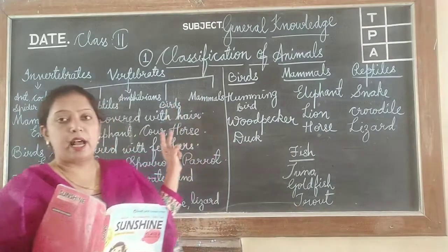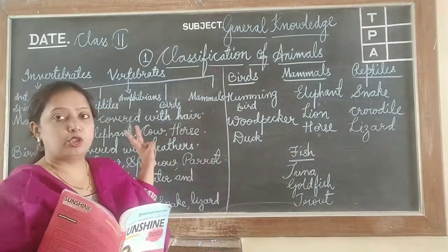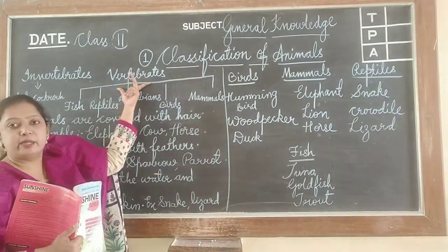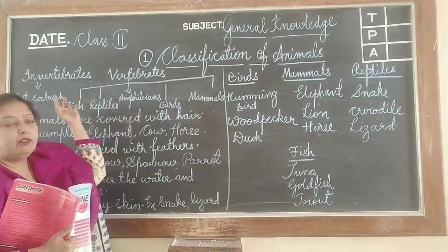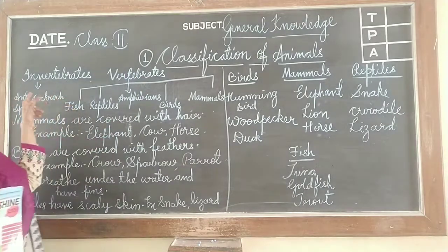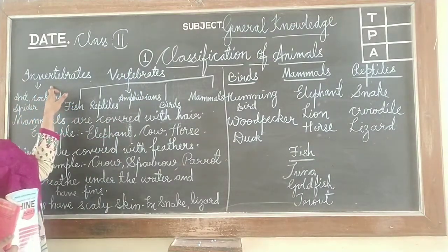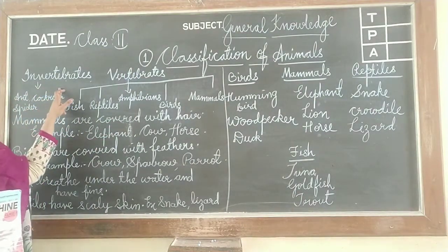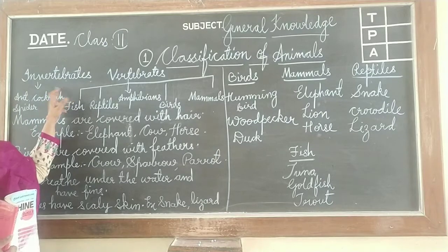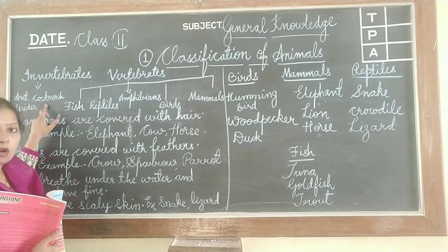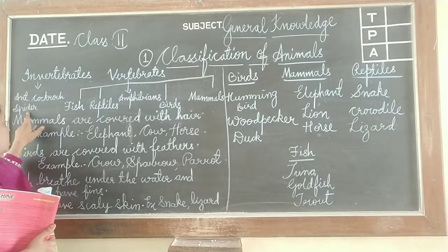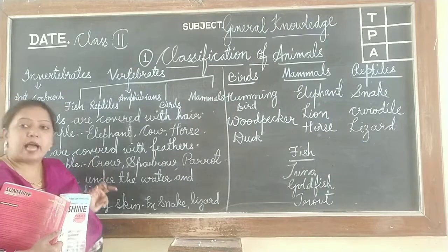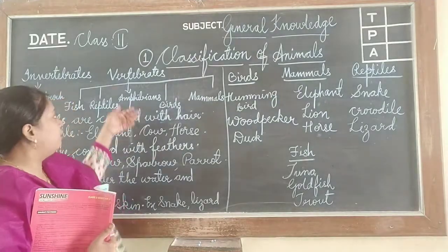Animals are classified into two groups: invertebrates and vertebrates. Invertebrates are the animals who don't have backbone. Ant, cockroach, and spider are examples of invertebrates.